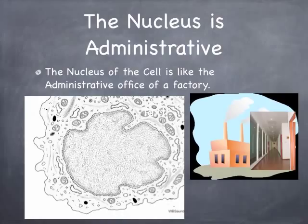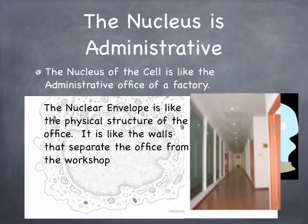The nucleus of the cell has several parts to it as well, and each one of these parts has something to do with the administrative office. The nuclear envelope is the physical structure of the office — it's what separates the nucleus from the cytoplasm. If you look closely at the nuclear membrane, you'll actually see that it's double-walled, but in places there are little openings — little gaps along that double-walled membrane — which are like doorways so that things can enter and leave the nucleus. The nuclear envelope is like the wall structure, the physical structure of the administrative office.